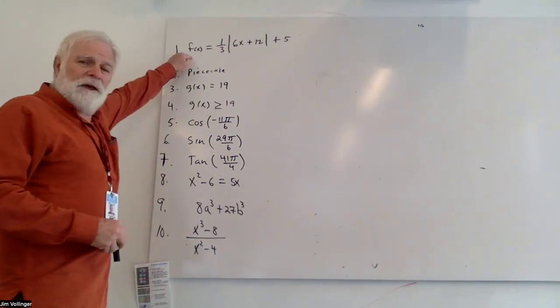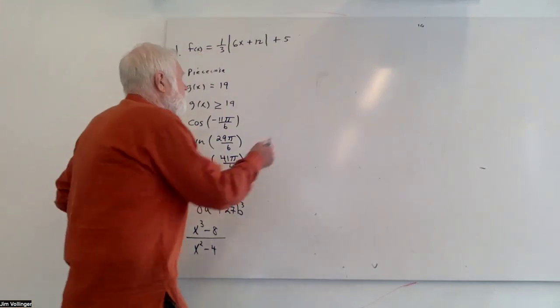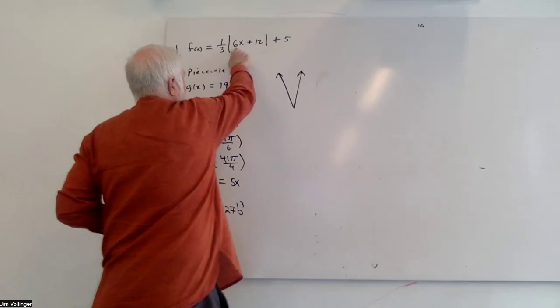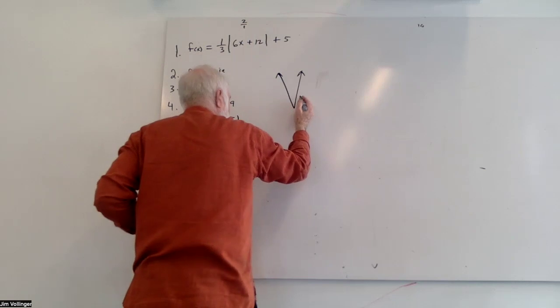All right, so we're going to graph f of x, absolute value, positive multiplier, a v-shaped problem. Slope is going to be one-third of six or a two-to-one slope. So every time I go over one, I'll be going up two.